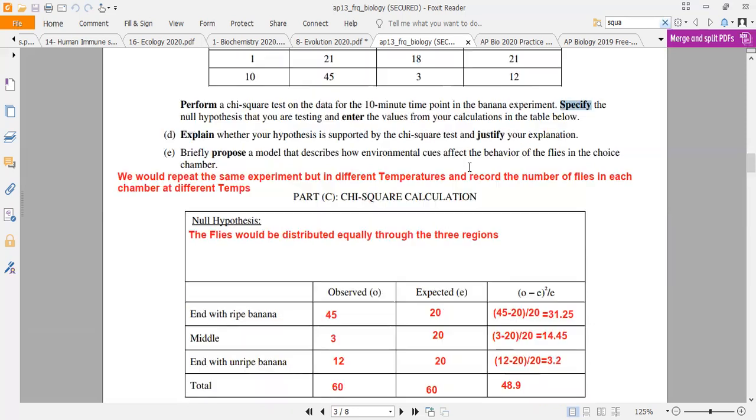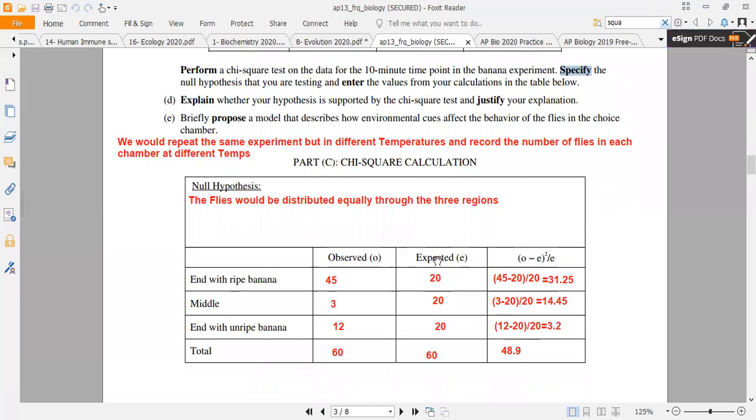In the experiment, I have 60 individuals. So the expected value, meaning that every room of the three rooms, will be 20 individuals. In any experiment, the expected value will be everything you have distributed equally.